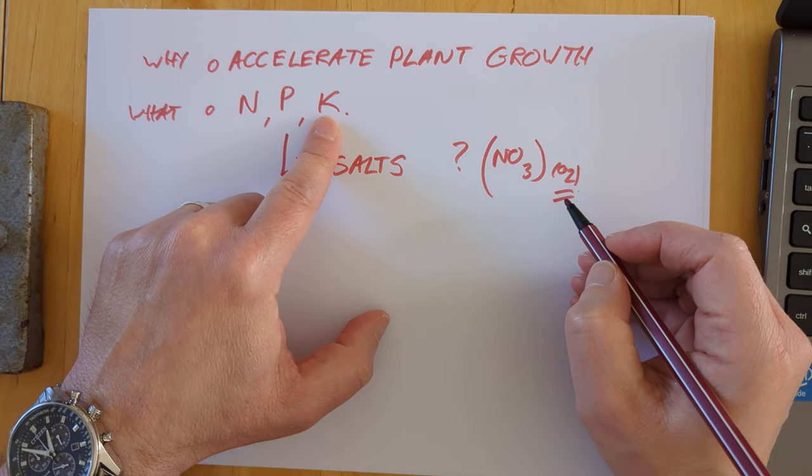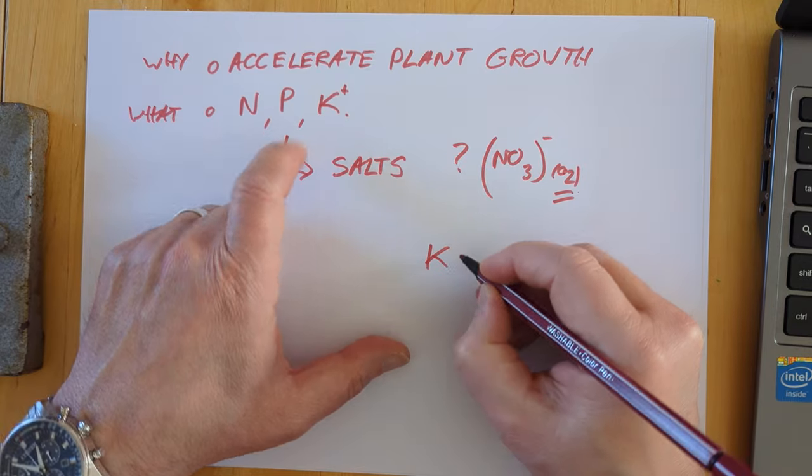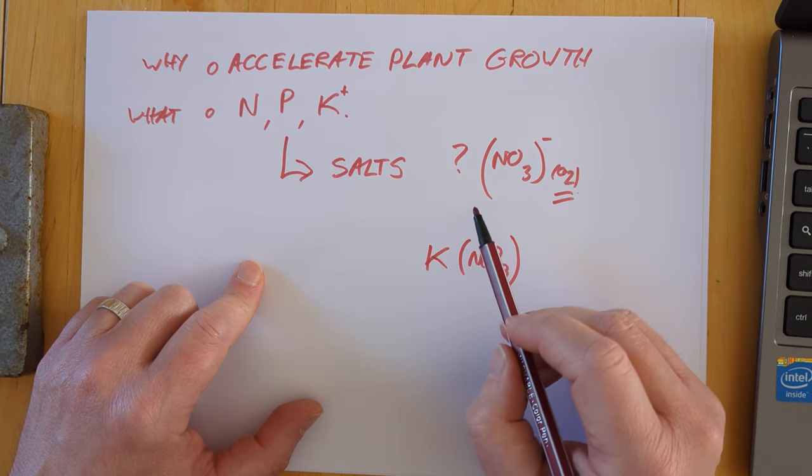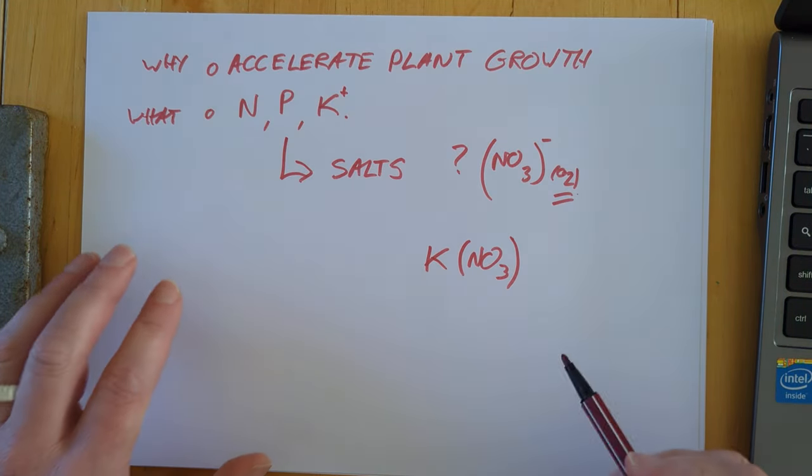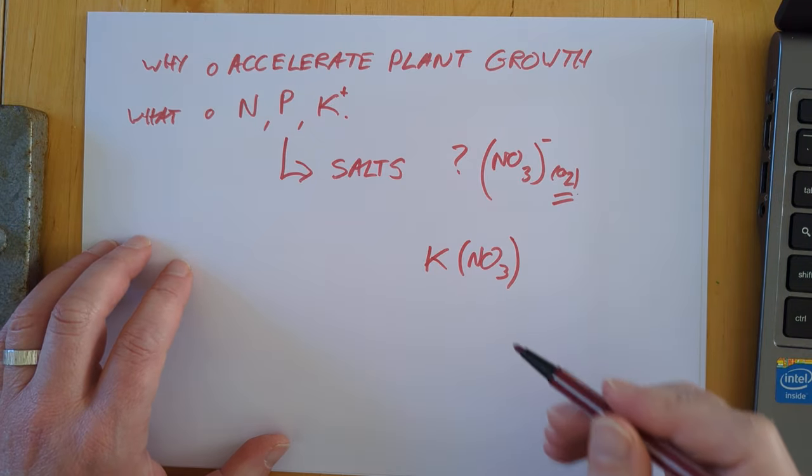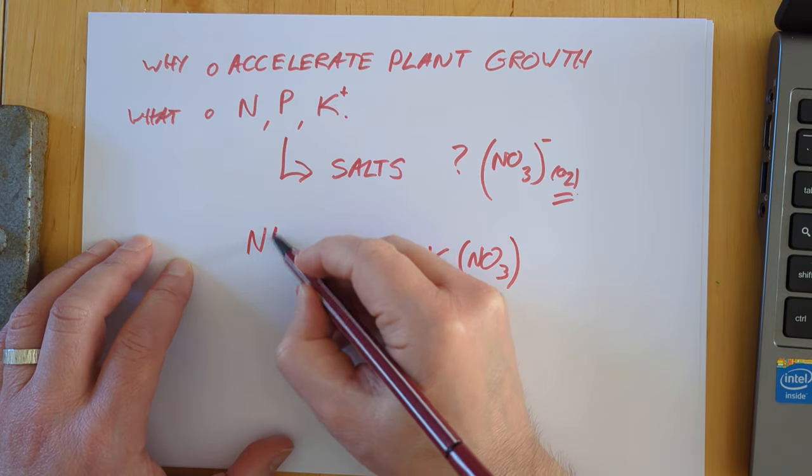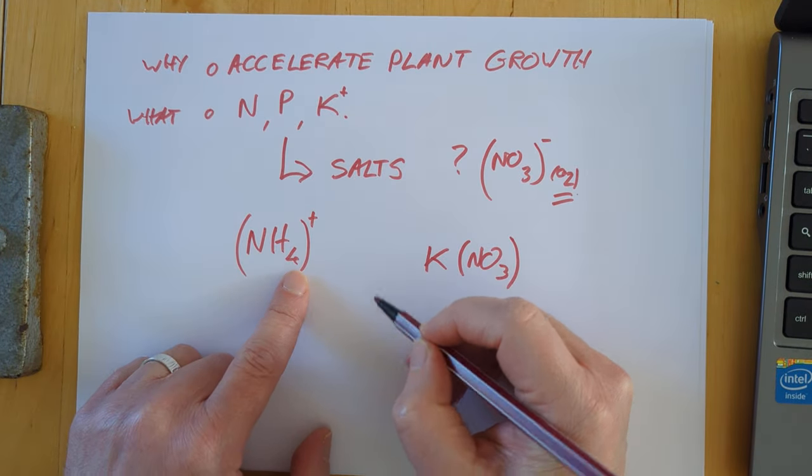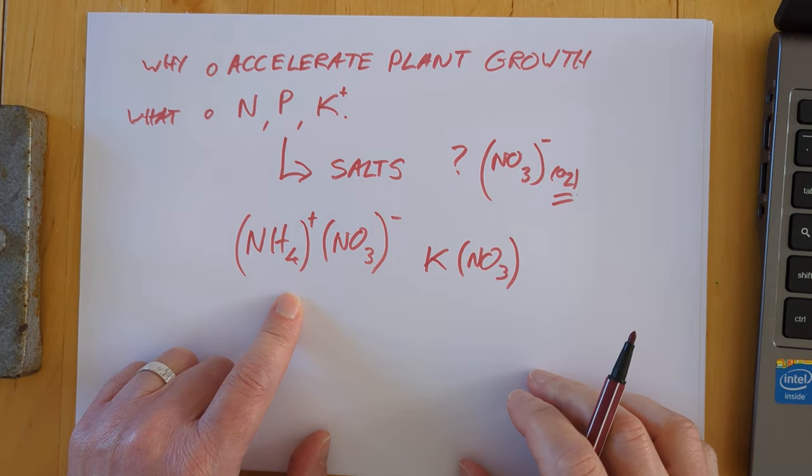Something nitrate would be a good start. What could the something be? Well you could go with potassium. Nitrate's a negative ion, potassium's a positive ion, so potassium nitrate is a classic fertilizer. Another positive ion we don't mention that much is the ammonium ion, it's positive. So ammonium nitrate. Bear that one in mind when we talk about the guest calculation at the end of the video.